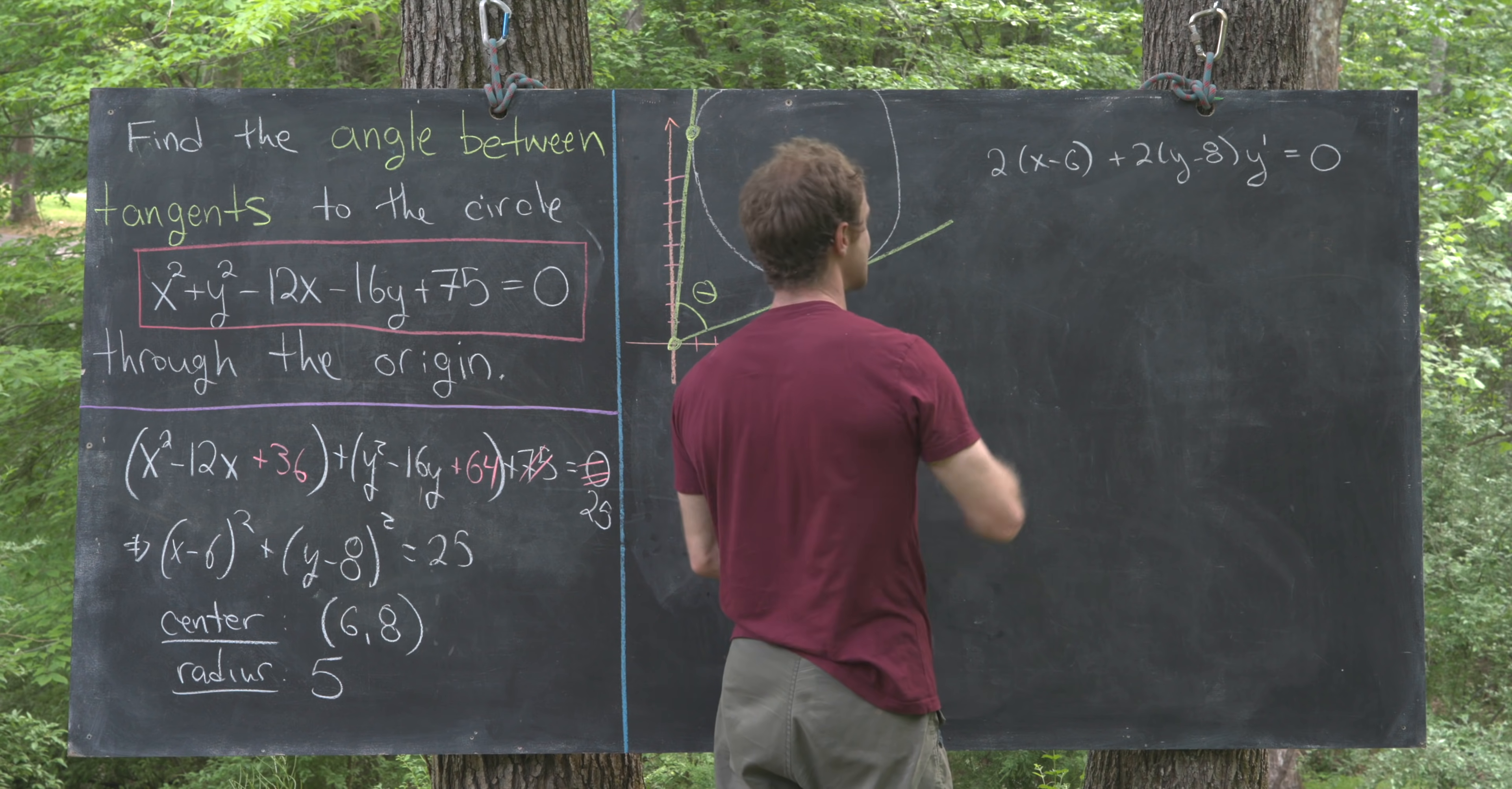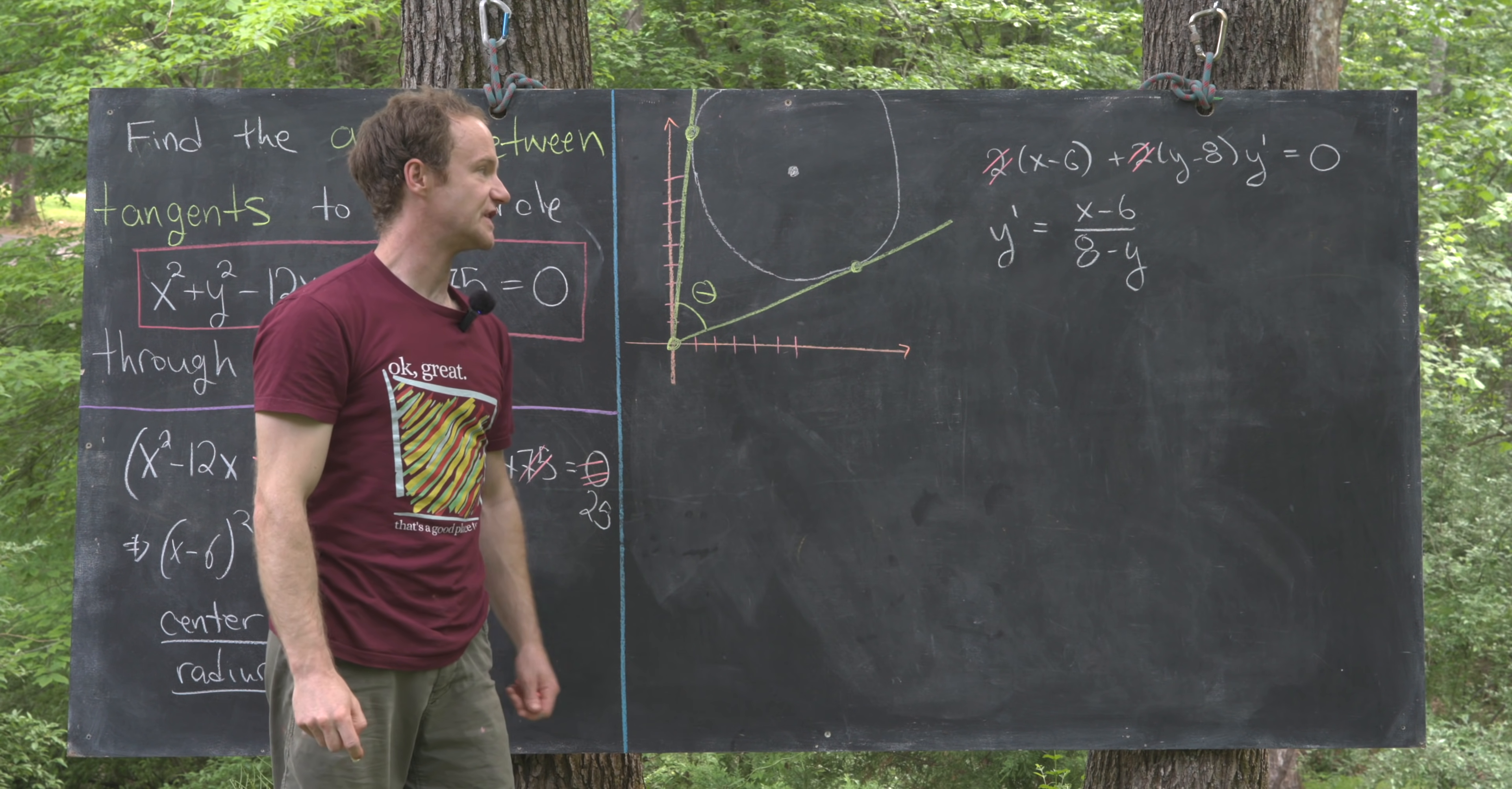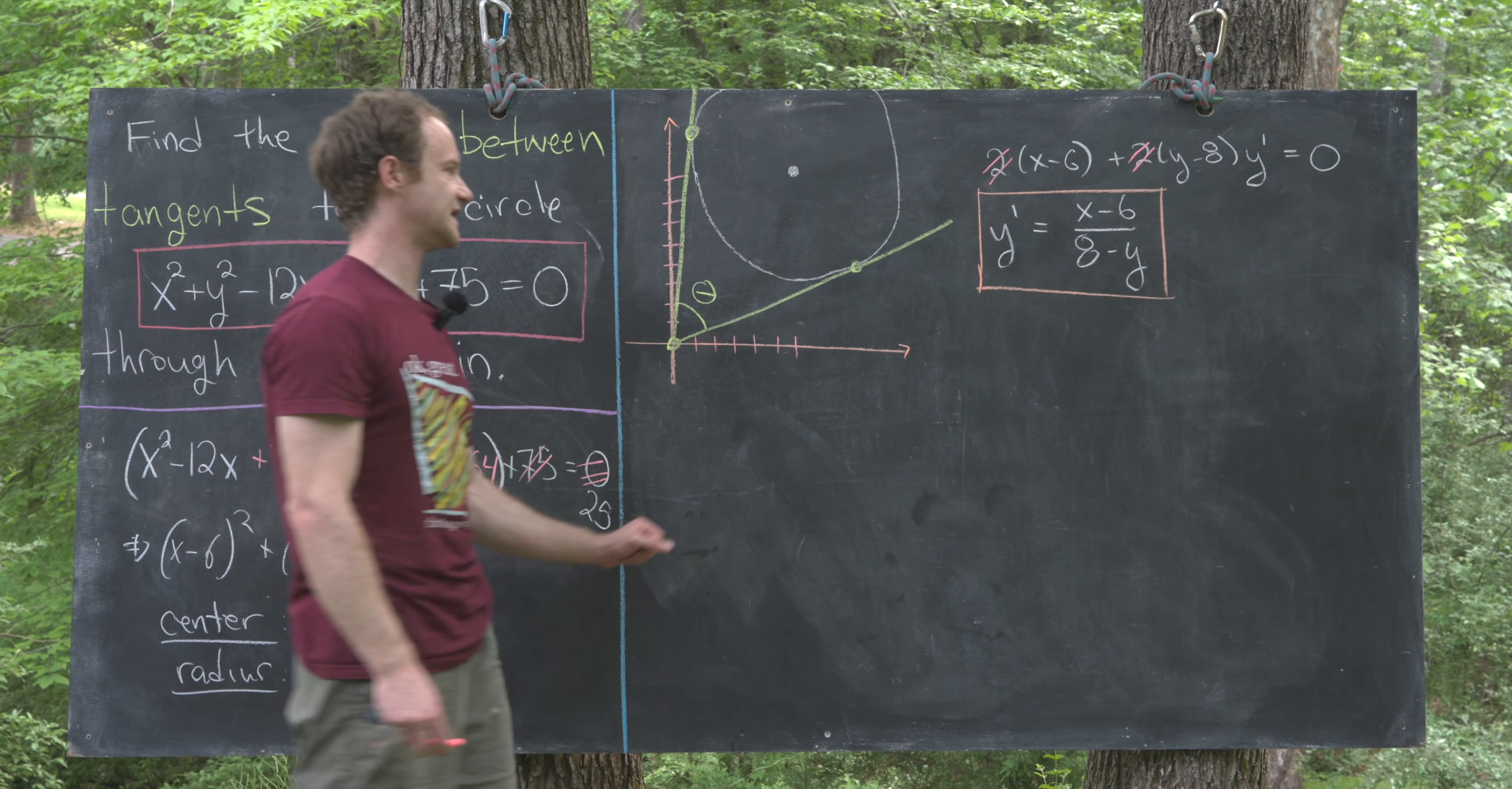We can divide both sides by 2 and get rid of those 2s, then solve and easily get y prime equals x minus 6 over 8 minus y, where I've switched the order of the subtraction so the leading term is positive. That's one way of measuring the slope of a tangent line to this circle.